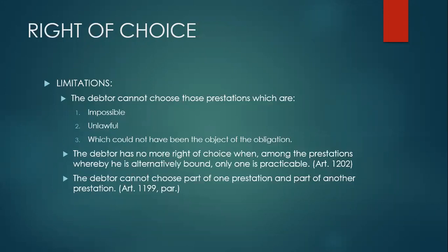For number one, if the prestation is impossible, unlawful, or which could not have been the object of the obligation, then the prestation is void. However, if only one prestation is impossible, unlawful, or which could not have been the object of the obligation, the obligation will remain to be valid, because there are other alternatives that can be performed by the debtor. So what remains in the alternative obligation shall be the subject of choice of the debtor.